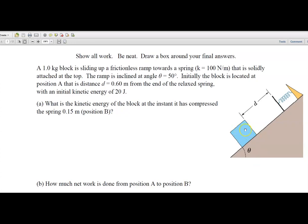We've got a one kilogram block sliding up a frictionless ramp. It's going to hit a spring with spring constant k equals 100 newtons per meter. It is solidly attached at the top. The angle of the incline is 50 degrees.